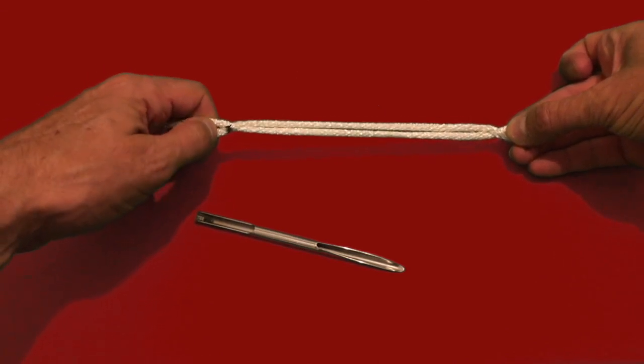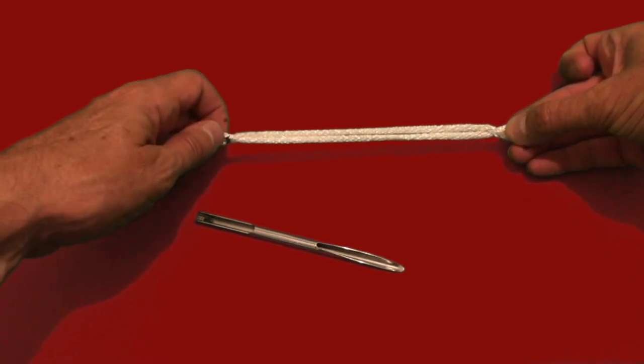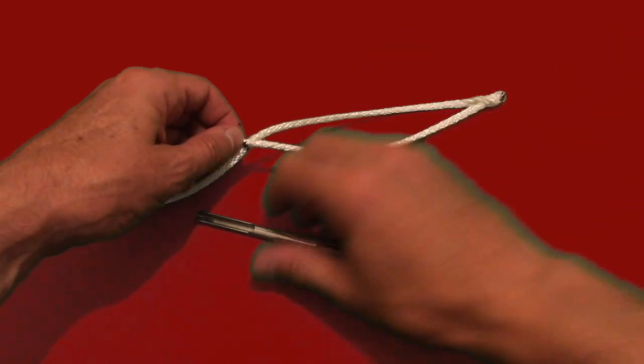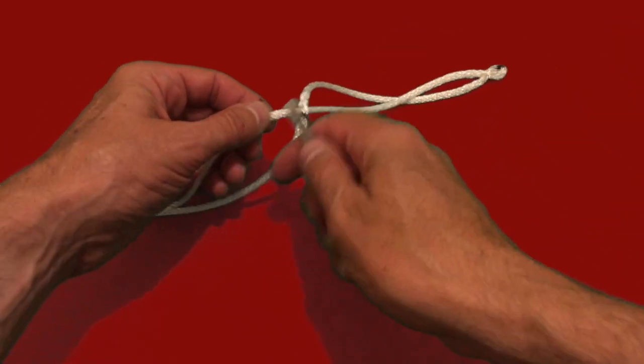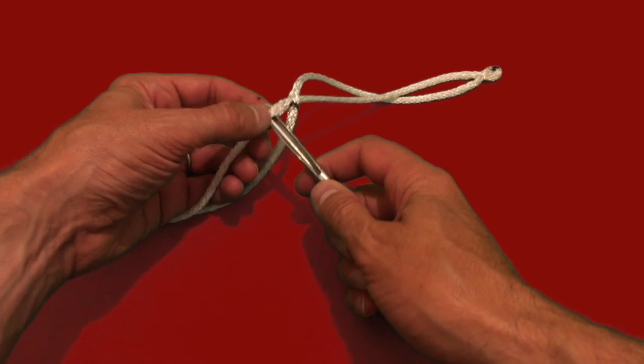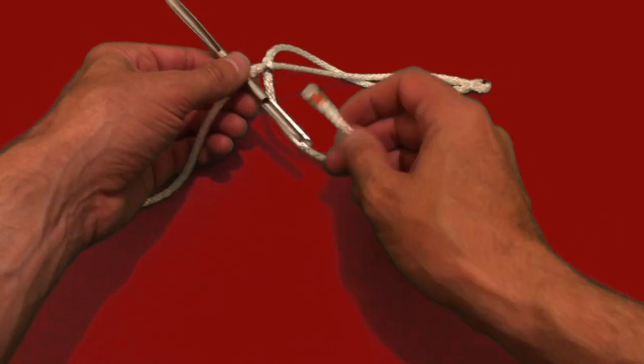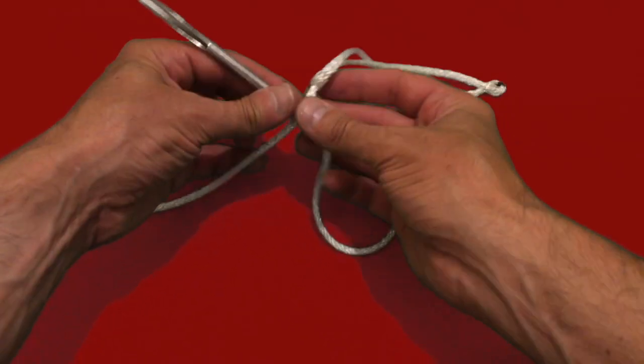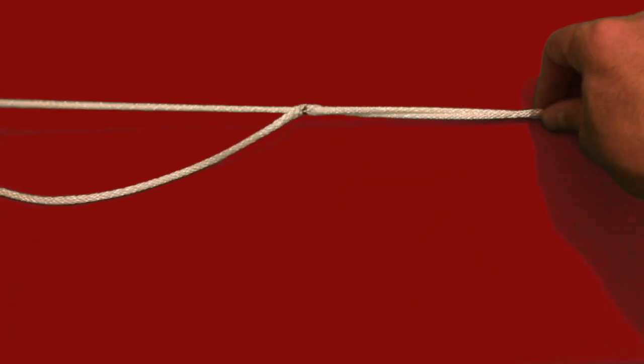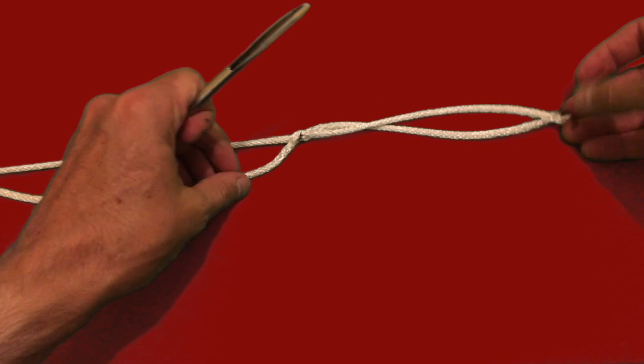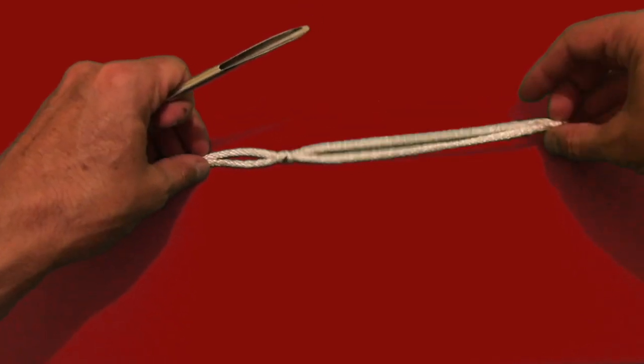To complete the shackle you want to get the tail of the line which wasn't marked and pinch it with your fingers in line where the diameter mark was. Take your fid and feed it through that line. Get the tail which was marked, put it in the fid, and pull it through, effectively creating the lock component at the end of the soft shackle.